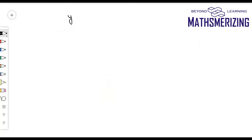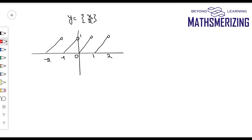Suppose I have to draw the graph of y equals fractional part of (x/2). I'll draw the graph of fractional part of x. Since it is (1/2), I'll multiply every x-value by 2. So the key points become 2, 4, −2, +4. That is the graph of y equals fractional part of (x/2), and its fundamental period is 2 units.